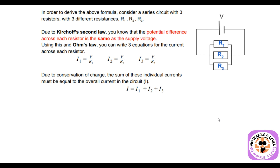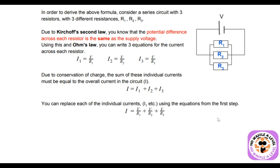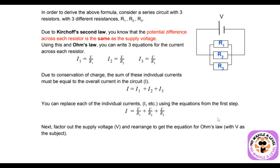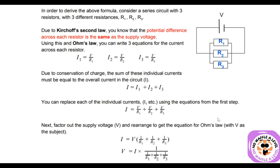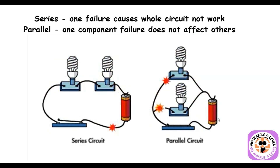So It = I1 + I2 + I3 = V/R1 + V/R2 + V/R3. Since voltage is the same throughout, factoring it out gives It = V × (1/R1 + 1/R2 + 1/R3). Since current divided by voltage equals 1/R, we get 1/Rt = 1/R1 + 1/R2 + 1/R3. A key difference: in series circuits, any component failure causes the entire circuit to stop working, whereas in parallel, if one component fails it does not affect the others.